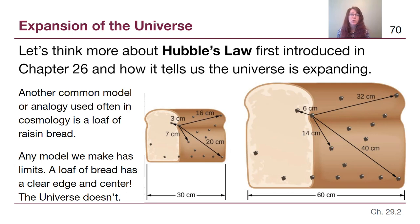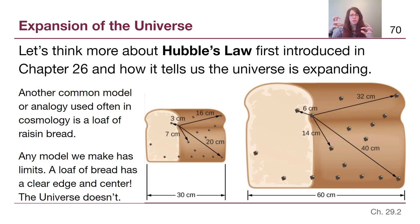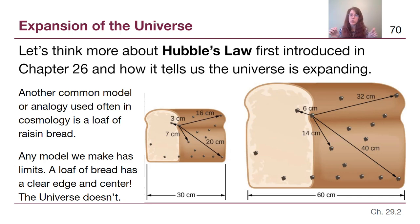Another helpful model is raisin bread — a very common analogy when thinking about the universe. When raisin bread bakes, the raisins themselves stay raisin-sized because they're held together, but the bread itself expands. All those raisins end up roughly in the same placement relative to each other but are now all farther apart than before. No matter which raisin we consider, everything is moving apart in a way that fits Hubble's Law. However, any model has limits: a loaf of bread has a clear center and a clear edge, and that's a problem for us.